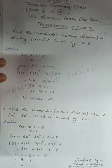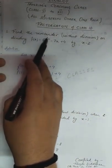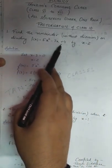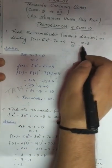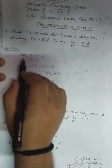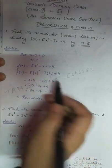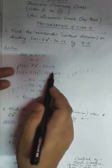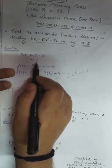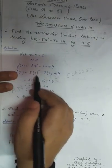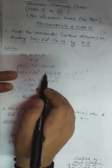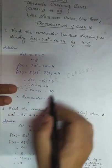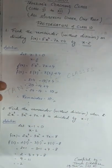Here there are a few sums which I have already solved. The question is: find the remainder without division — meaning we apply the remainder theorem — on dividing f(x) = 5x² - 7x + 4 by x - 2. We let x - 2 = 0, so x = 2. Then f(2) = 5(2)² - 7(2) + 4 = 5×4 - 14 + 4 = 20 - 14 + 4 = 10. So the remainder is 10.